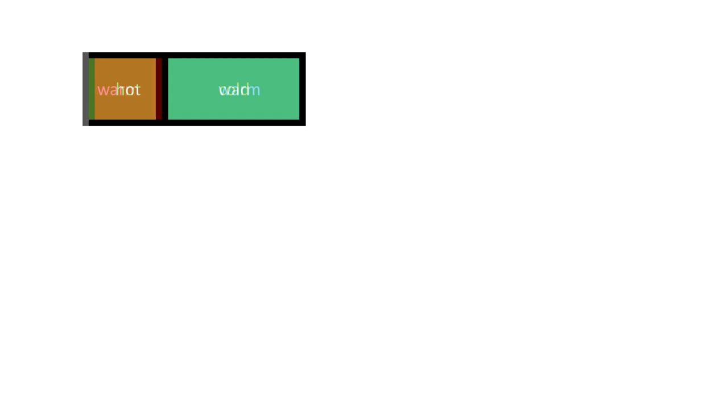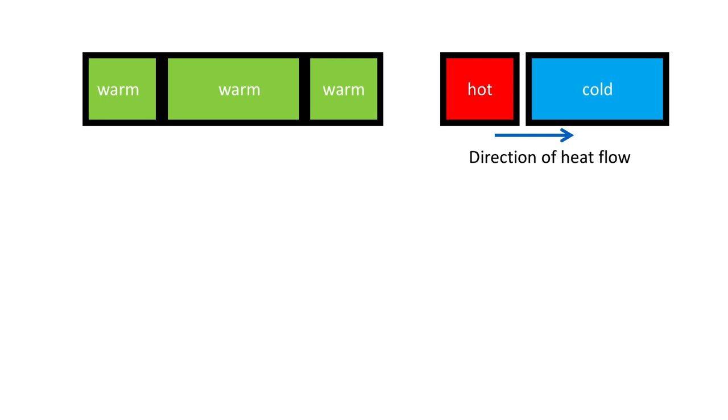Take a cold body, bring a hot body into contact with it, wait for a while and both of them will become warm. Put another warm body into contact with them and nothing will happen. This is telling us that heat flows from a hot body to a cold body. In fact, that is the definition of heat: it goes from hot to cold.